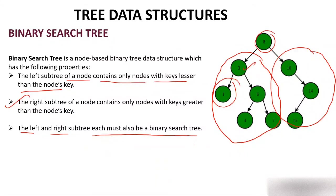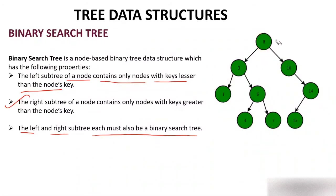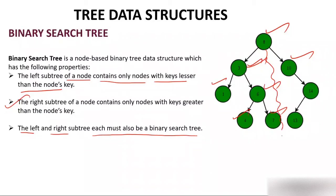So a binary search tree is a tree in which for every node, its left child is less than that node and right child is greater than that node. Looking at the example: node 8 has left child 3 which is less than 8, and right child 10 which is greater than 8. Node 3 has left child 1 and right child 6. Node 6 has left child 4. If you consider 8, all elements to the left are less than 8 and all elements to the right are greater than 8.